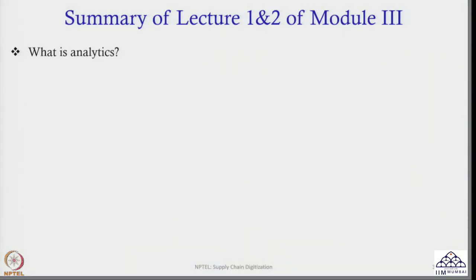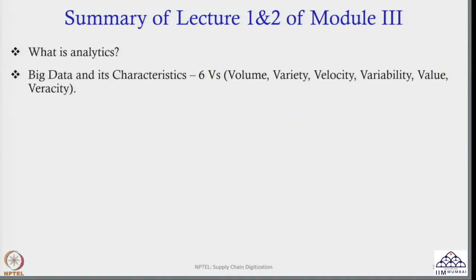Before proceeding, we will summarize what we discussed in the last two lectures of Module 3 on analytics in supply chain management. First, we talked about what analytics is, and then we discussed the various characteristics of big data — the six Vs: volume, variety, velocity, variability, value, and veracity.